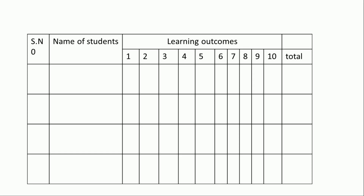Next, we have to maintain individual records of the students according to learning outcomes. Taking reference from the Kalika Chetarike of last year, we make a format for learning outcomes for individual student records. Here it is: name of the student and 10 learning outcomes. If a student achieves a learning outcome, put a right mark in the column and make the total.